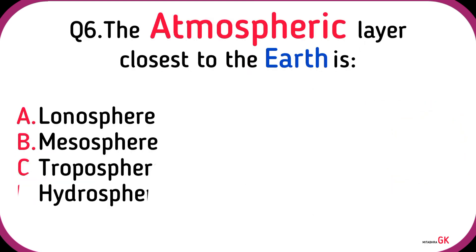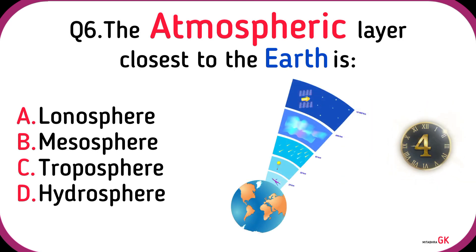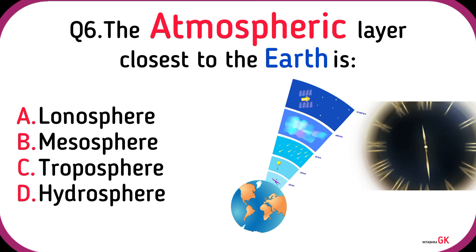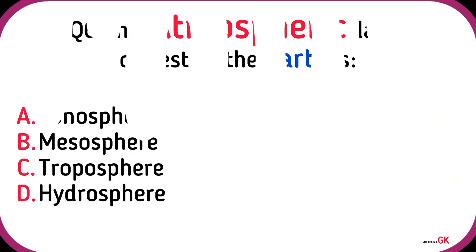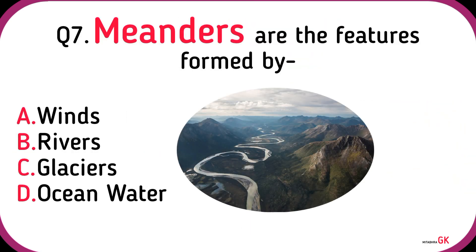Why does the earth have its own atmosphere? Because of gravity. The atmospheric layer closest to the earth is the troposphere.